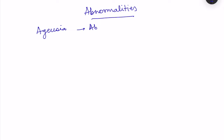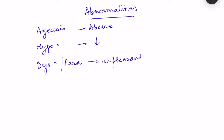Finally, certain abnormalities and terms to know: ageusia is absence of the ability to detect taste; hypogeusia is a decrease in the ability to taste; dysgeusia — also known as parageusia — is an unpleasant or distorted perception of taste, where one tastes something different from what is actually present. That covers the complete physiology of taste sensation.